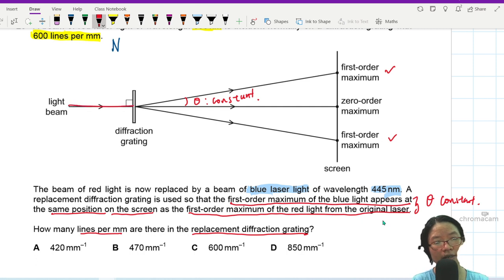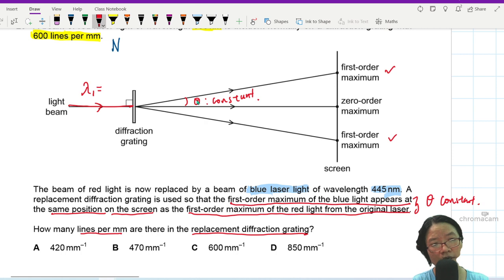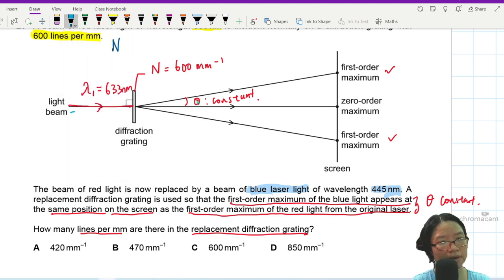So meaning I will shine a light here. Lambda 1 which is red light, 633 nanometer. And the grating, N is 600 lines per mm, so I'll put mm negative 1. Then I replace this with blue laser light, Lambda 2, 445 nanometer. And this new diffraction grating, let's say N2 is what I want to find. Let's call this one N1.